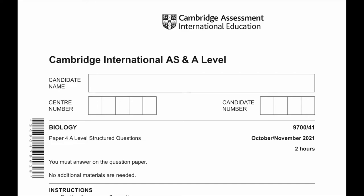Hello everyone. Today we'll be solving Cambridge International AS and A-Level Biology, paper 4, A-Level Structured Questions, October-November 2021, paper 4-1. We'll be solving from question number 1 to question number 5.